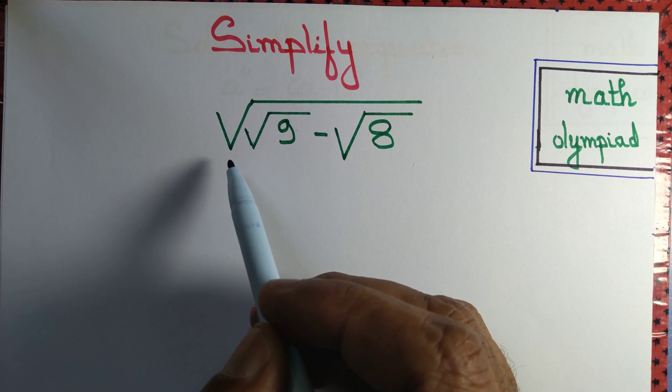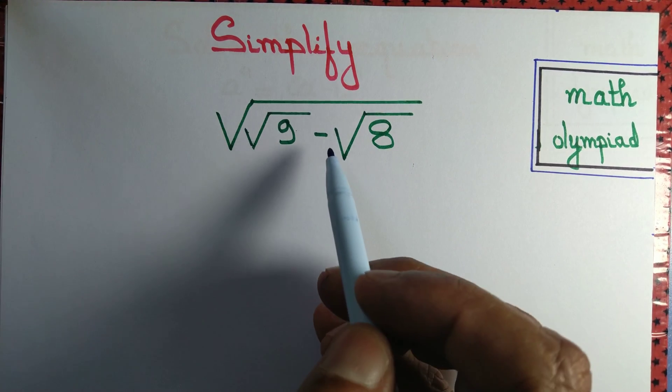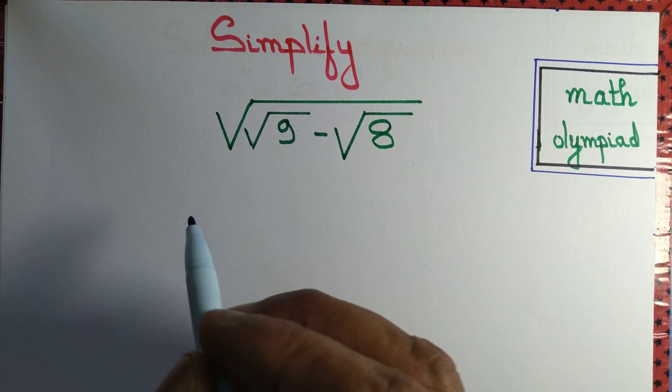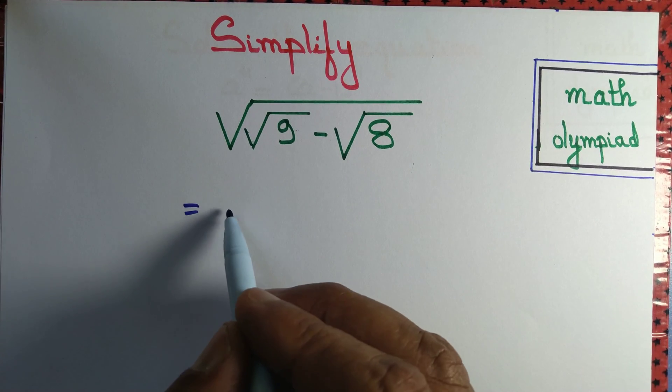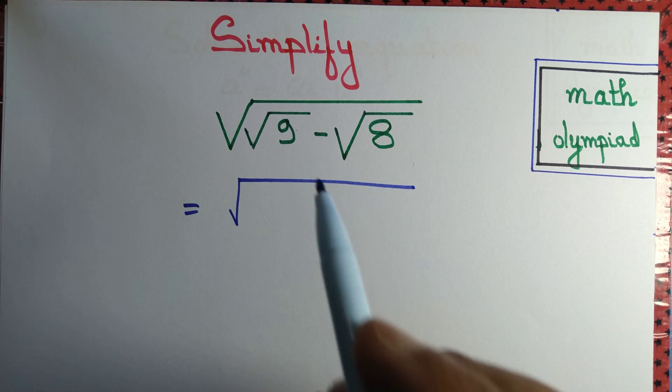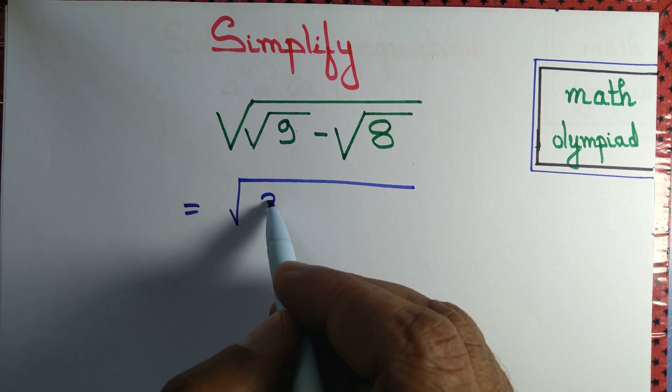Let us simplify the expression square root of root 9 minus root 8. Root 9 can be written as 3.